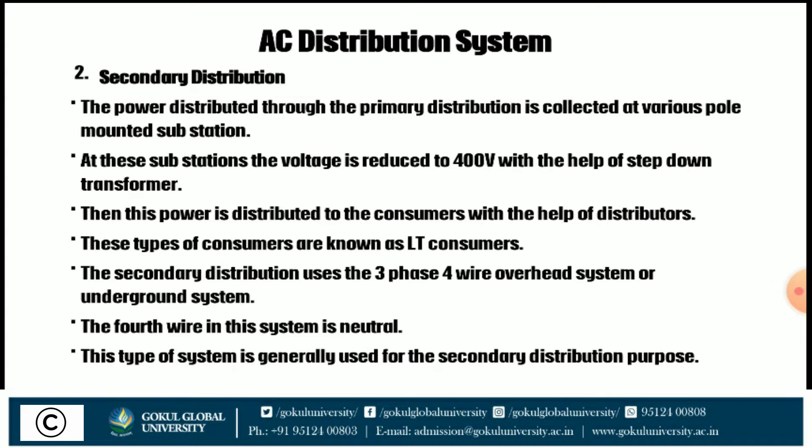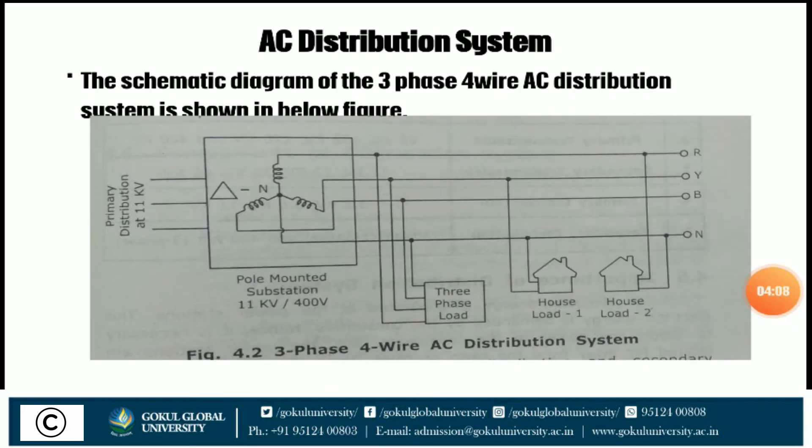The second part is the secondary distribution system. The power distributed through the primary distribution is collected at various pole-mounted substations. At these substations, the voltage is reduced to 400 V with the help of a step-down transformer. Then this power is distributed to the consumer with the help of distributors. This type of consumer is known as LT consumers. The secondary distribution uses a three-phase four-wire overhead or underground system. The fourth wire in this system is the neutral.